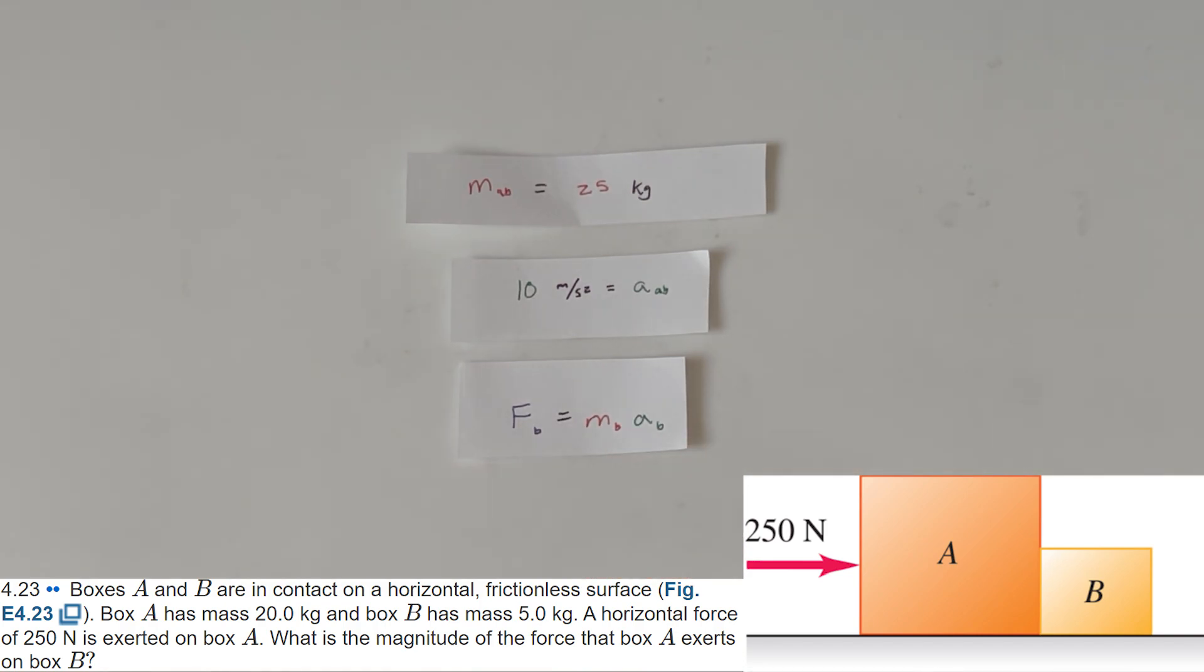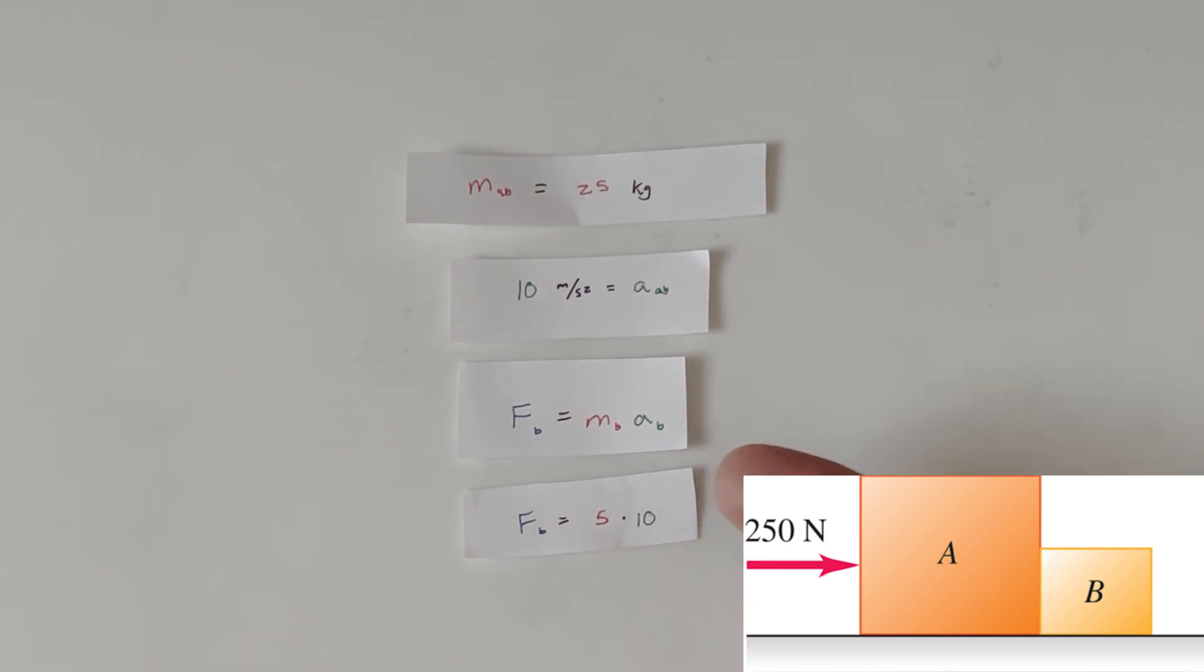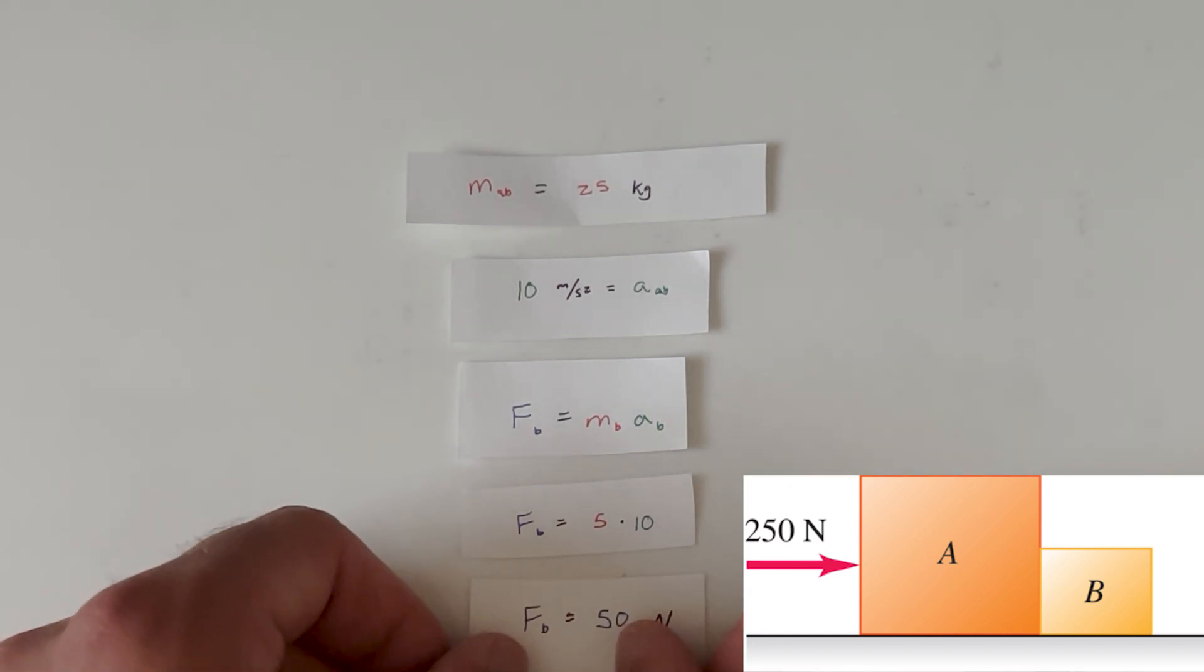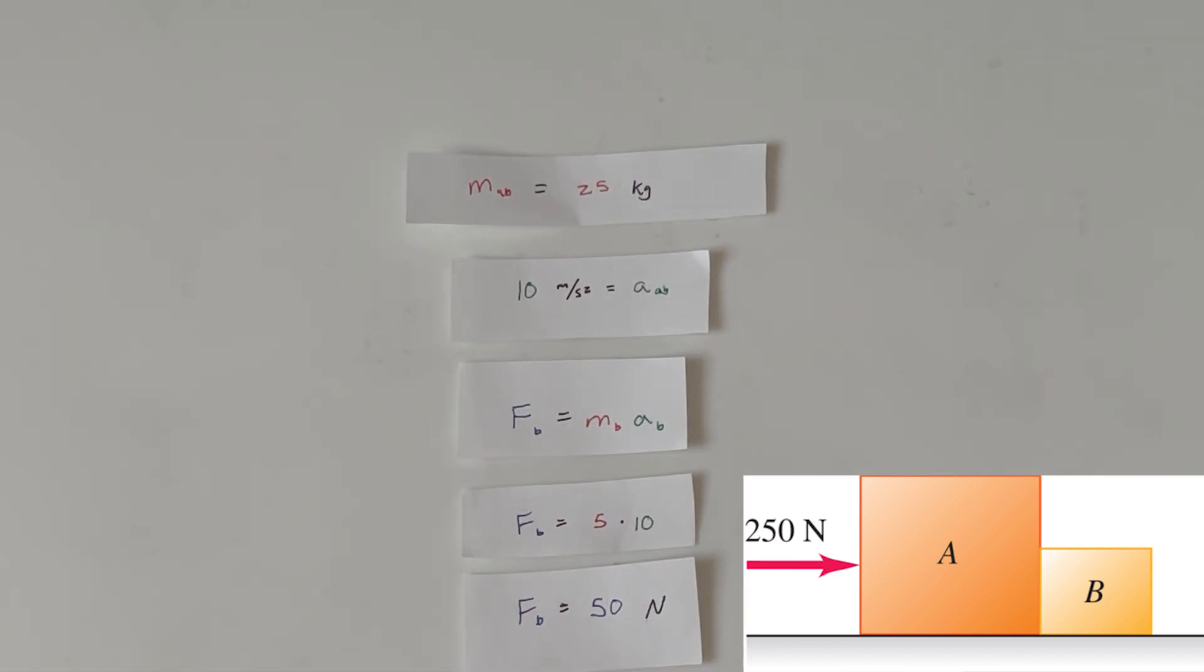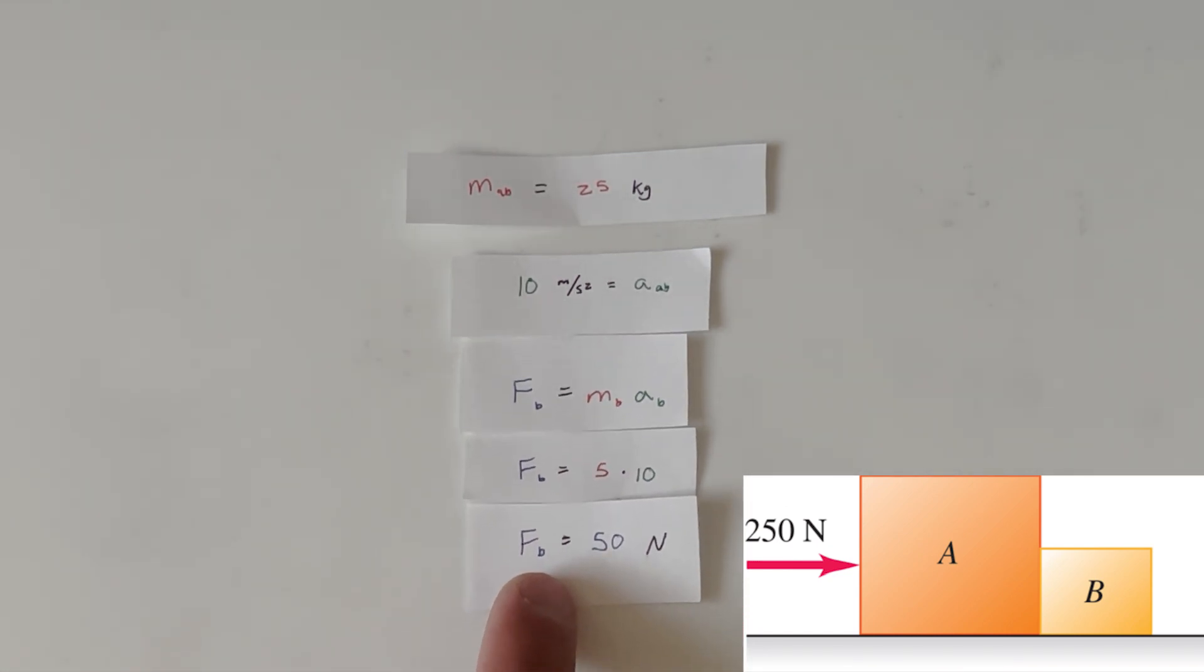Now, we know the mass of B is 5 kilograms. And we know that the acceleration of B is the same as the acceleration of A and B. They're both accelerating at the same. So 5 times 10. Of course, multiply those together. And you get that force of B is equal to 50 newtons.